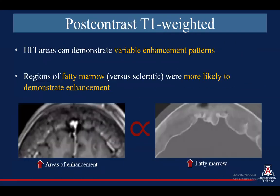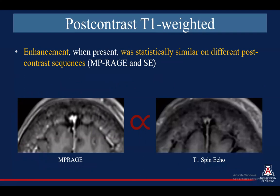For our post-contrast T1 images, we found that HFI can demonstrate many different enhancement patterns, and these areas of fatty marrow versus sclerotic bone were more likely to demonstrate enhancement. As you can see below, the areas of enhancement are more so correlating with areas of fatty marrow. When enhancement was present, it was statistically similar whether it was MP-RAGE or spin echo sequences.